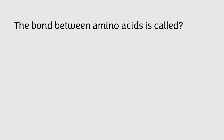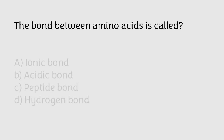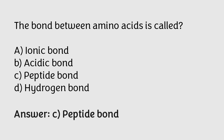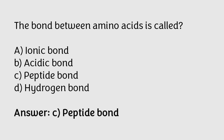The bond between amino acids is called: ionic bond, acidic bond, peptide bond, hydrogen bond. The correct answer is option C. The bond between amino acids is called peptide bond.